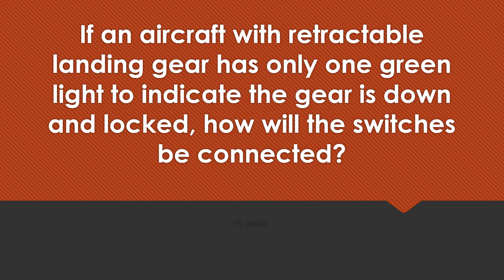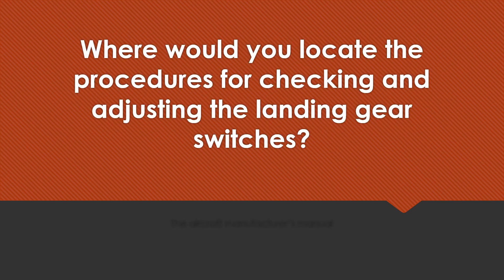If an aircraft with retractable landing gear has only one green light to indicate that the gear is down and locked, how will the switches be connected? In series. Where would you locate the procedures for checking and adjusting landing gear switches? The aircraft manufacturer's manual.